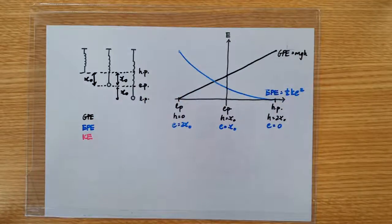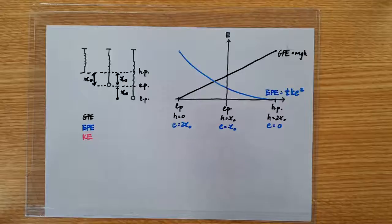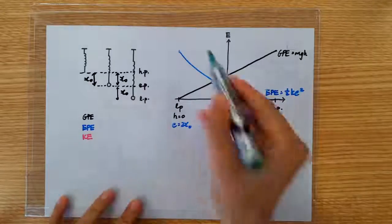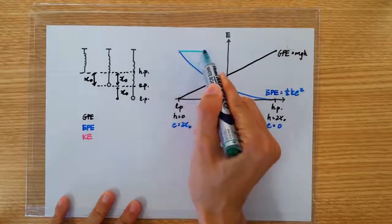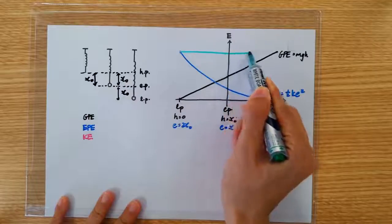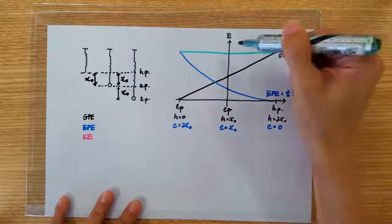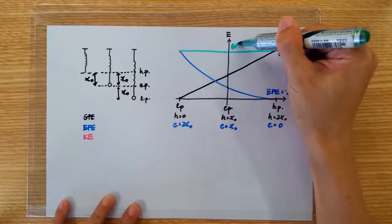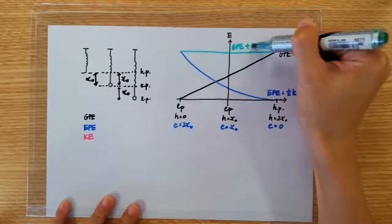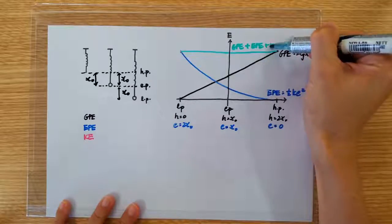In fact, I can draw a horizontal line right across here and call it the total energy, which is the GPE plus EPE plus KE.